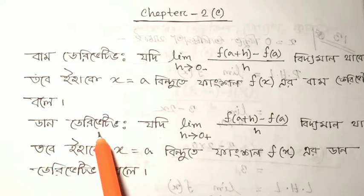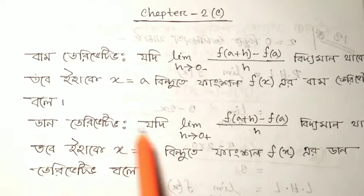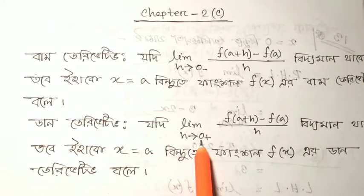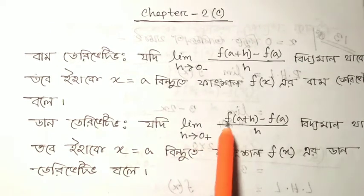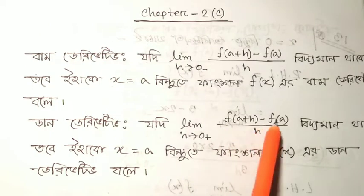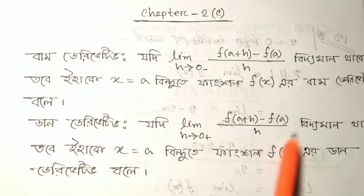We are going to talk about the DUN derivative. If the limit is 0 plus, f(a + s) minus f(a) divided by s.